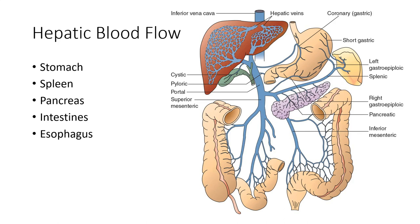We will discuss how it processes in the next slides. But it's important to remember that the flow of blood goes from these digestive organs through the portal vein into the liver, so it can have this important filtering and processing function.